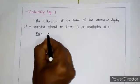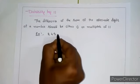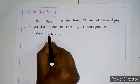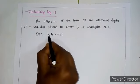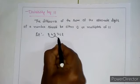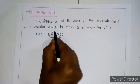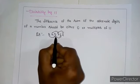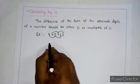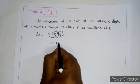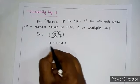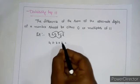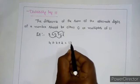For example, take 2,45,762. Here, the alternate digits are 2, 5 and 6, and 4, 7 and 2. When we add the first set of alternate digits 4, 7 and 2: 4 plus 7 is 11, and 11 plus 2 is 13.